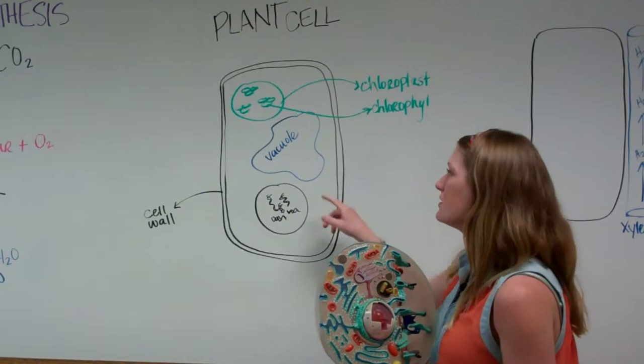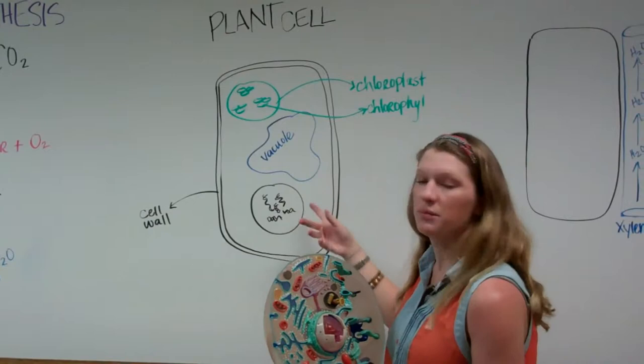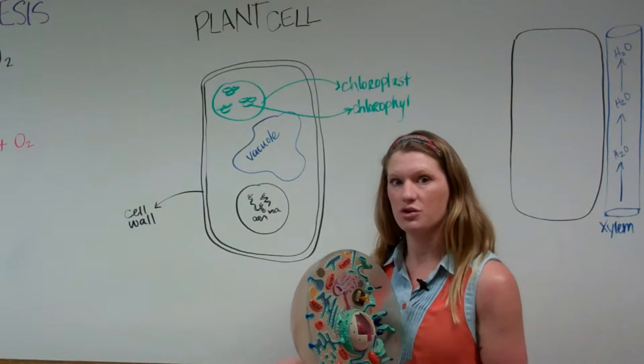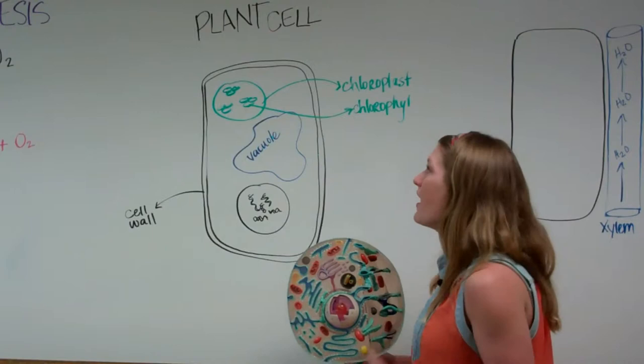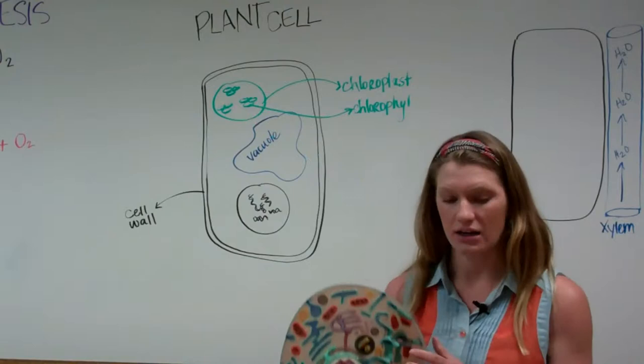The second difference between animal cells and plant cells is the presence of this vacuole structure here. The vacuole, which is only present in plant cells, stores water. It can expand and shrink depending on how much water is available to the plant. And the third biggest difference is that plant cells have an organelle called the chloroplast, which is absent in animal cells.